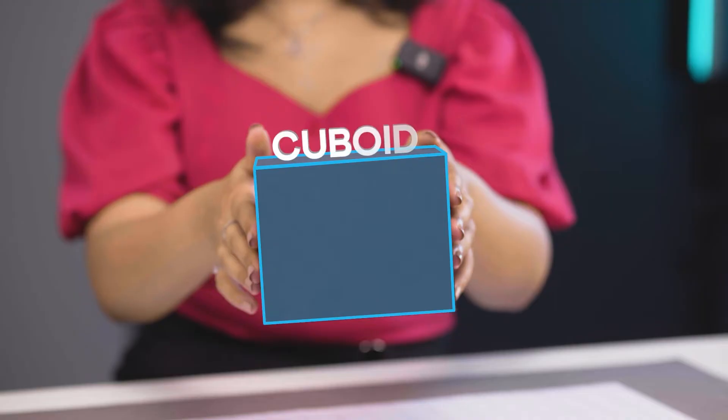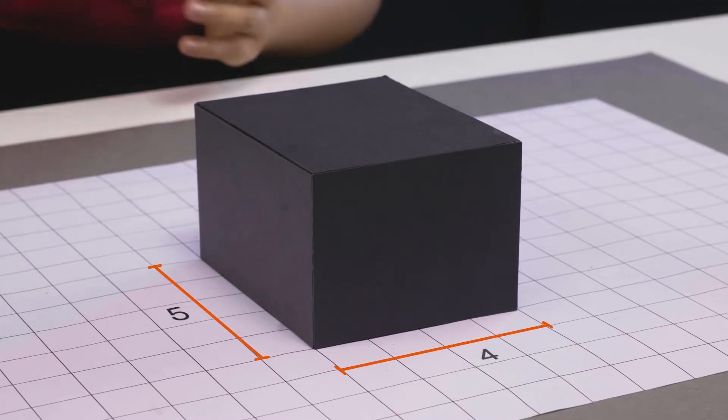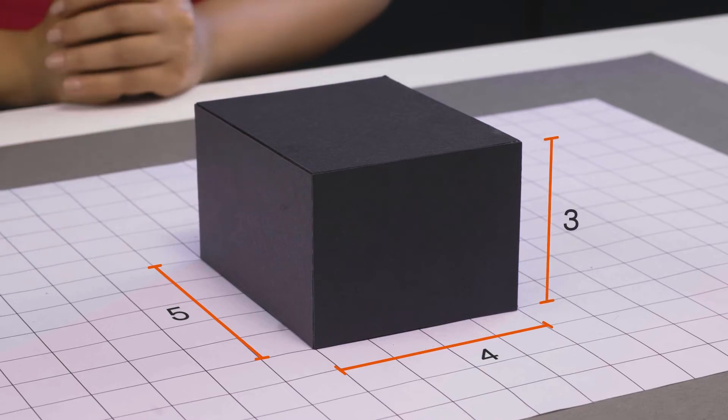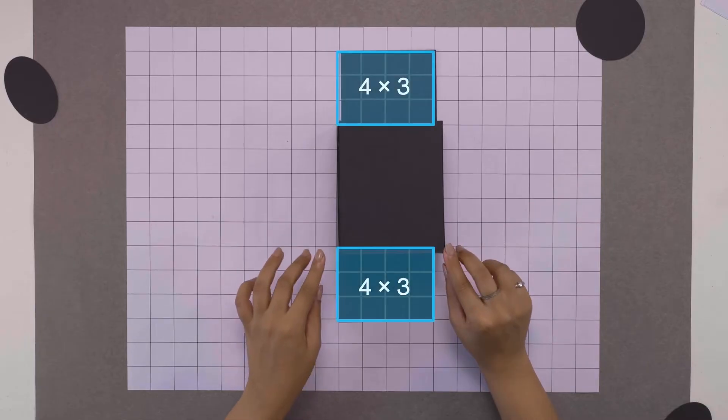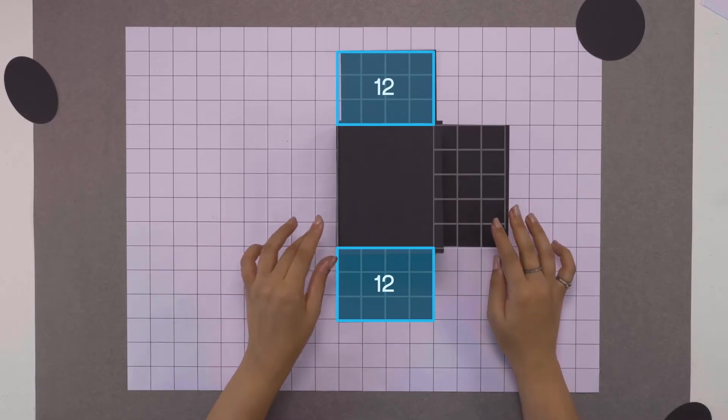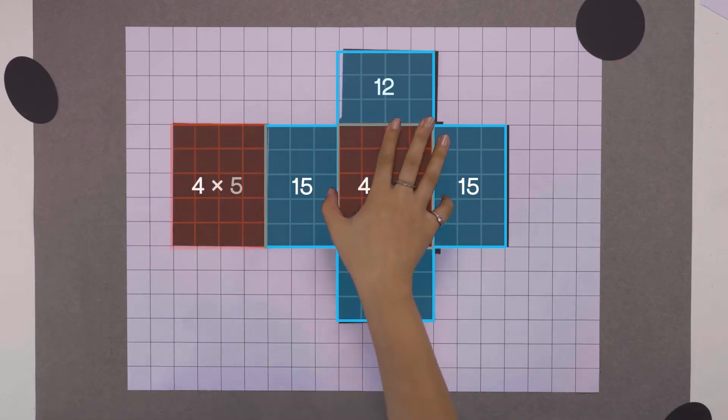All the faces of this shape are rectangles, it's called a cuboid. Its length is 5 units, breadth is 4 units and height is 3 units. Its surface is made up of 2 rectangles with areas 4 times 3, 2 rectangles with areas 3 times 5 and 2 rectangles with areas 4 times 5.